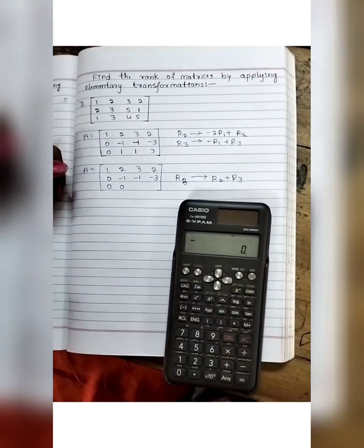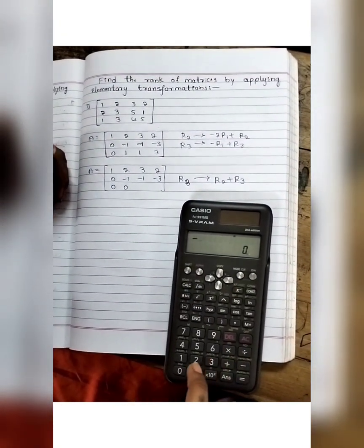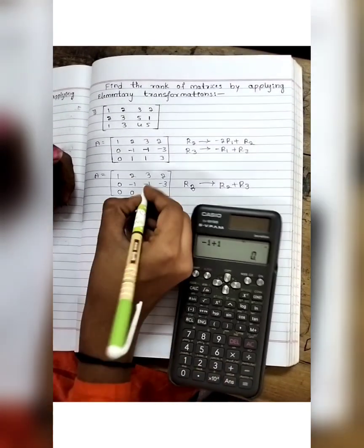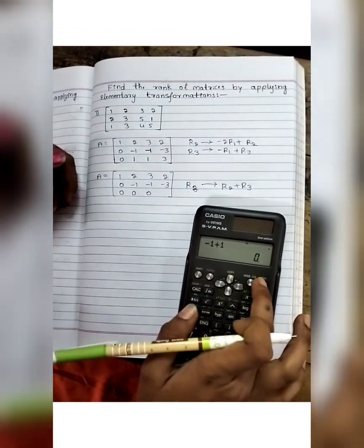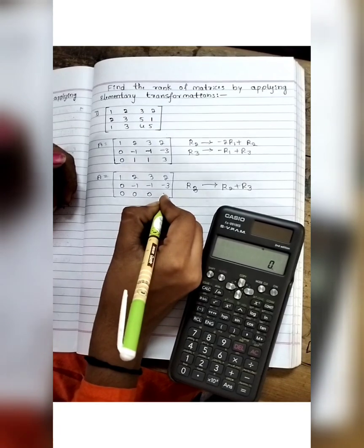Next R2 plus R3. Minus 1 plus 1, we get 0. Next, minus 3 plus 3, we get 0.